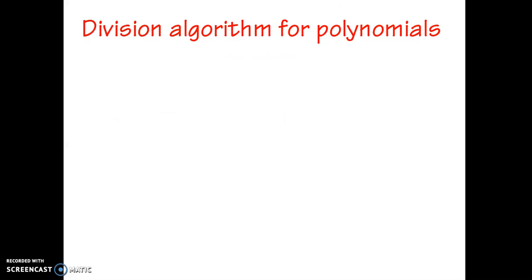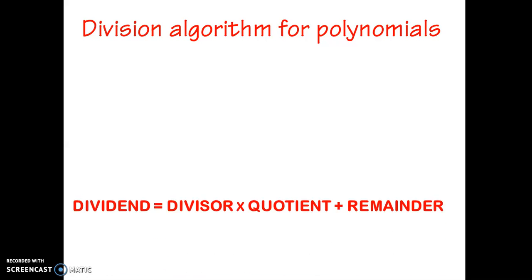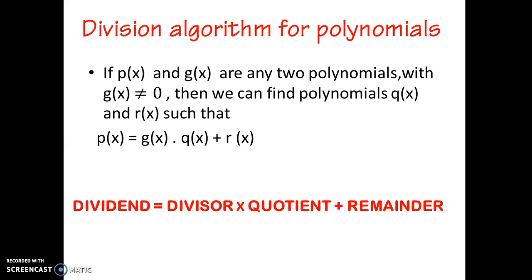Now, division algorithm for polynomials. If p of x and g of x are any two polynomials with g of x not equal to zero, then we can find polynomials q of x and r of x such that p of x equal to g of x into q of x plus r of x.